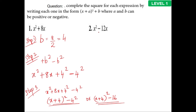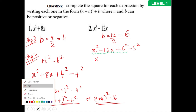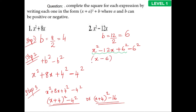Next: x squared minus 12x. Since there's a minus sign, the identity is a minus b, the whole square. Here b equals 12 divided by 2, which is 6. Writing it out: x squared minus 12x plus 6 squared minus 6 squared. Grouping the required terms gives x minus 6, the whole square, minus 36. The negative identity is used because the 2ab term carries a negative sign.